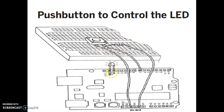The LED is connected between pin 13 and ground. Pin 13 is connected to the anode and ground is the cathode. Pin 13 is the output pin. Pin number 7 is connected to the junction of the resistor and the push button. If you press the push button you will get 5 volts; if you release it, it will be 0 volts.